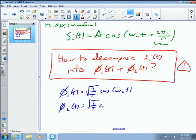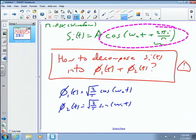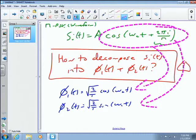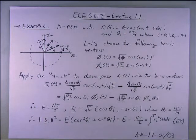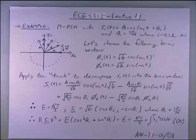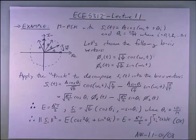It's not immediately obvious how to decompose the PSK waveform into sines and cosines. Sadly, we have to use trig identities. We take s_i(t) = A·cos(ω_c t + θ_i), where θ_i = 2πi/M, and apply the identity cos(A + B) = cos(A)cos(B) − sin(A)sin(B).